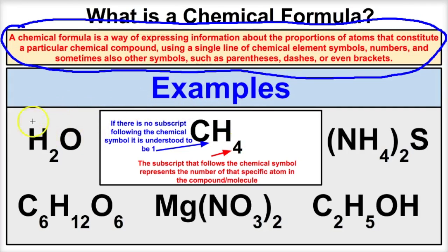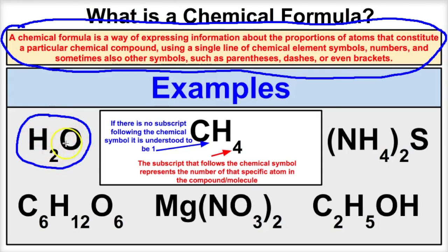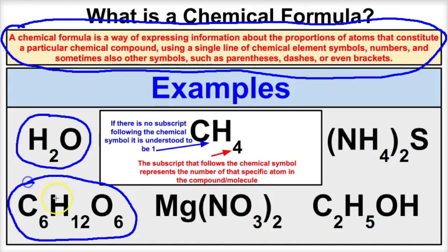If we take a look at some examples, here's the chemical formula of water: there are two hydrogens and one oxygen, and together that makes up the chemical compound we know as water. Here is the chemical formula for glucose — it's six carbons, twelve hydrogens, and six oxygens. C6H12O6 is the chemical formula for glucose.